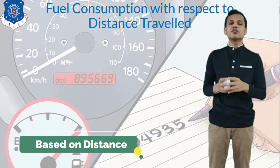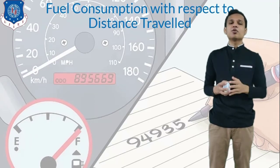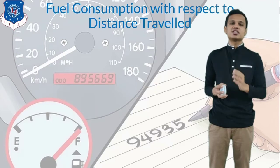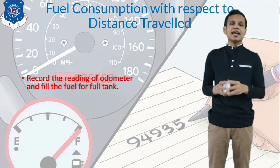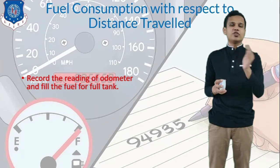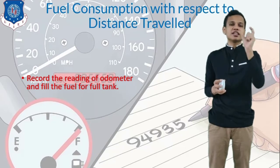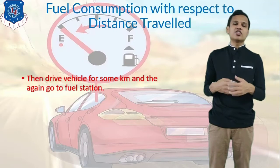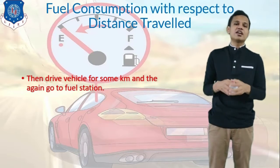The third method is fuel consumption with respect to distance traveled — used to measure the vehicle's average. The procedure involves recording the odometer reading, then filling the fuel tank completely to the full level. After that, the vehicle is driven for some random kilometers — for example, 200 kilometers — without needing a fixed target distance.